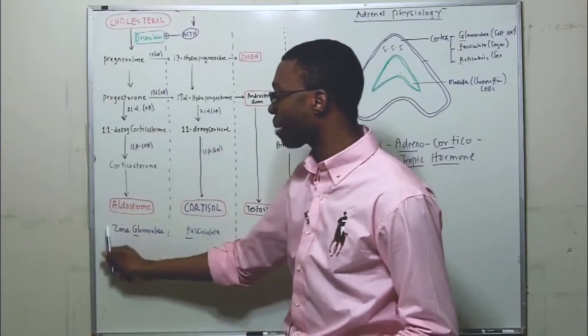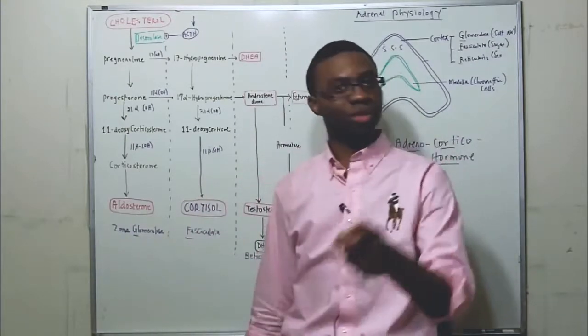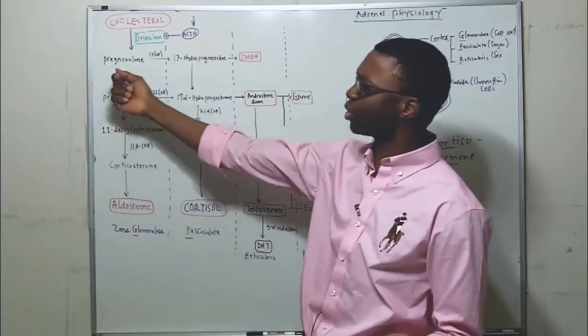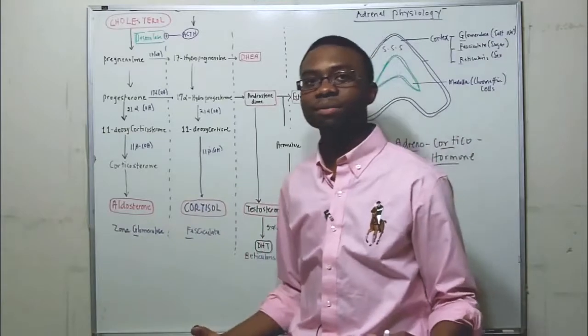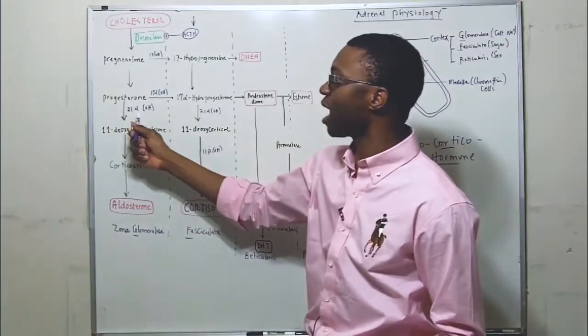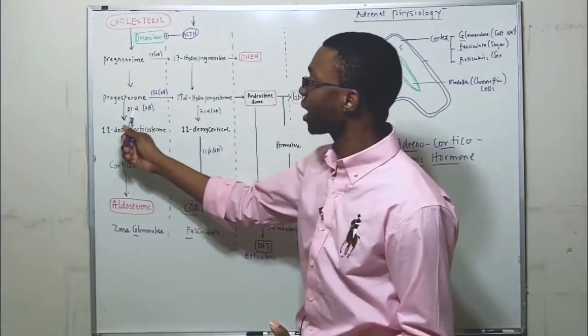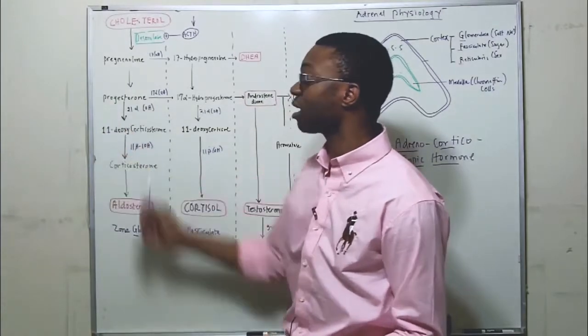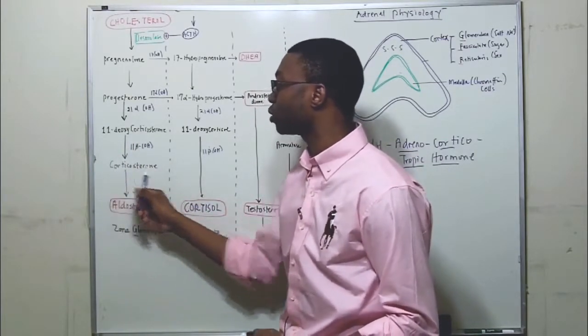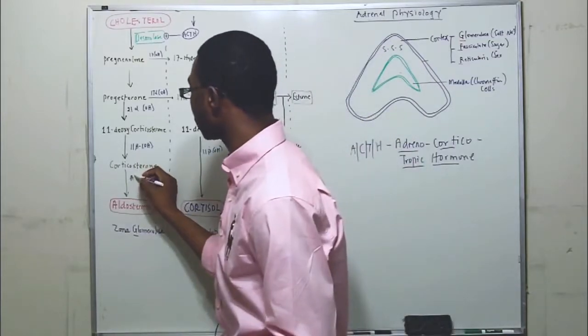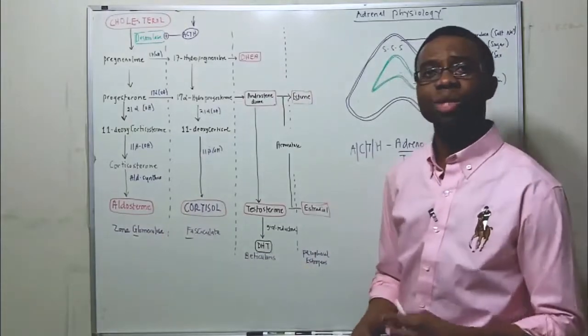ACTH is going to activate the enzyme called desmolase. Pregnenolone is going to drop all the way down. This is all happening in the zona glomerulosa from progesterone. Progesterone is converted by 21-alpha-hydroxylase, which is an enzyme that we can get a deficiency in. 21-alpha-hydroxylase converts progesterone into 11-deoxycorticosterone. This enzyme is converted by 11-beta-hydroxylase into corticosterone, which by aldosterone synthase converts to aldosterone. That is a crazy pathway, don't you think?